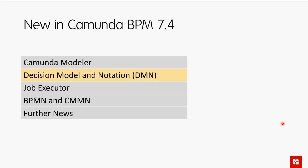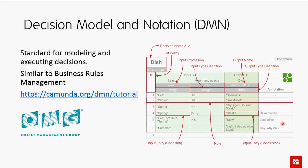Now let's move on to DMN — the Decision Model and Notation standard. The BPMN standard comes from the Object Management Group (OMG), and the same institution is responsible for CMMN and DMN. DMN is a standard about modeling and executing decisions. If you think that smells of business rules management, you're correct. You can find a tutorial at camunda.org/dmn/tutorial.